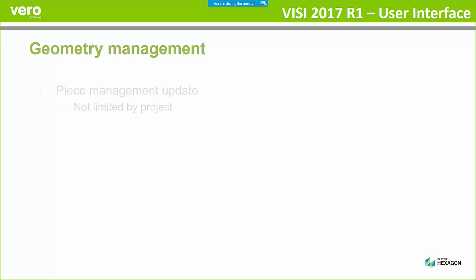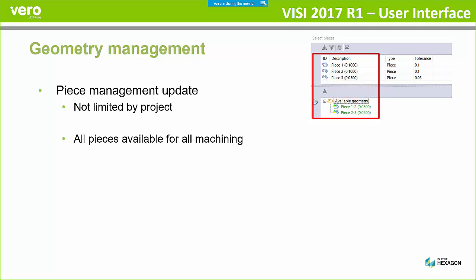Basically what we've got now is that there's been updates to the piece management and it's not limited anymore by the project. So any of those restrictions that we had previously — where it was limited to the project, where you had multiple or one piece and additional auxiliary pieces and when you're trying to use them all together — any limitations have all been removed now. Any of the pieces are available for all of the machining.